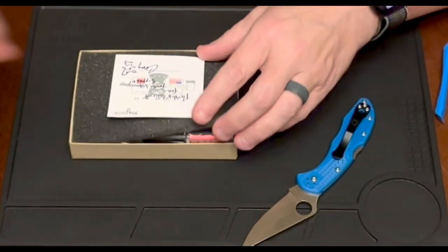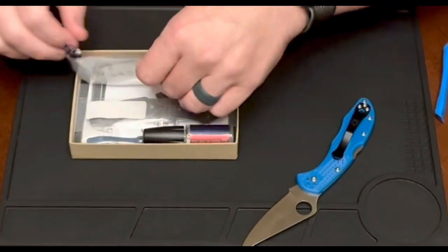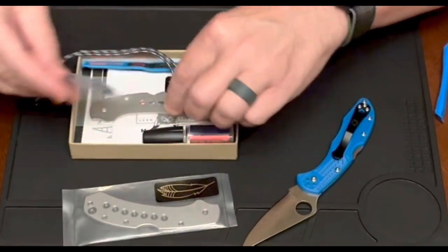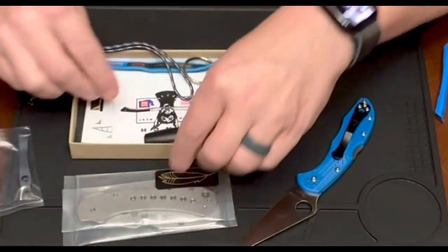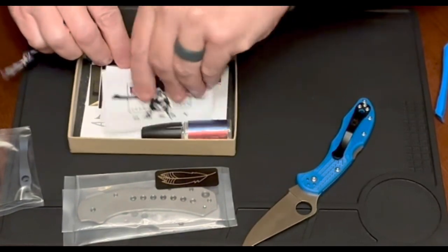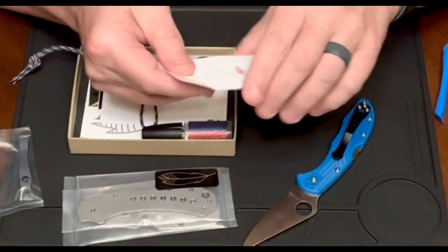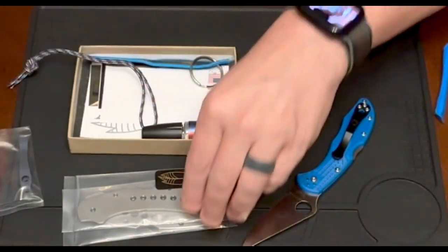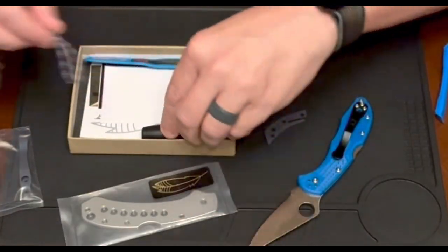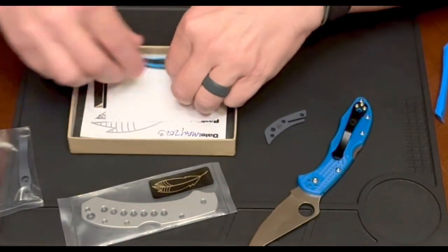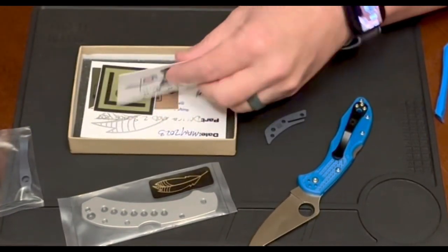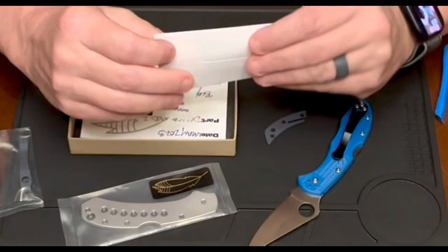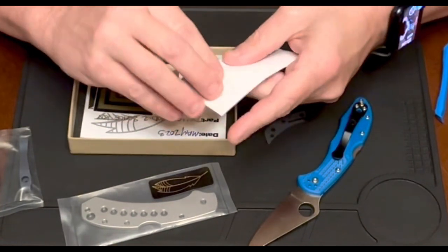So in here we have our scales, backspacer, and deep carry pocket clip. Some extra swag, a screw set.